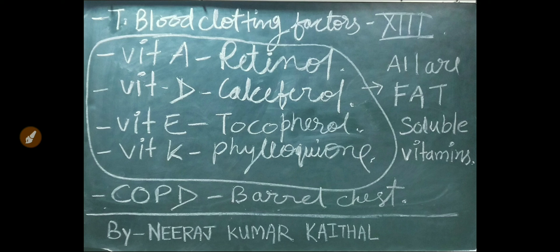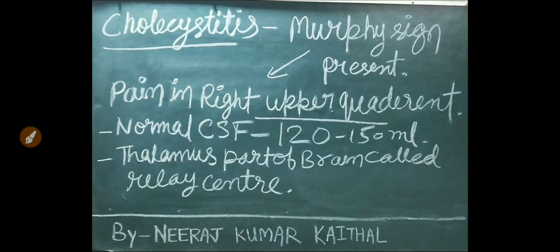Barrel chest is a condition mostly seen in COPD patients. COPD stands for chronic obstructive pulmonary disease. Murphy's sign is present in cholecystitis — pain in the right upper quadrant. Normal CSF amount is 120 to 150 ml. The thalamus is known as the relay center of the brain.